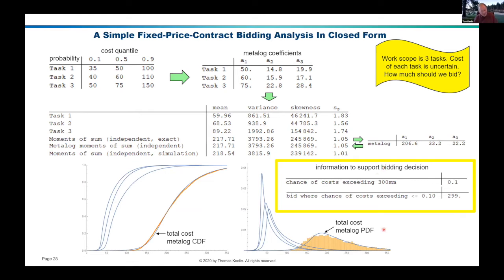Once you have this metalog over total cost, it allows you to provide some information relevant to your original decision: how much should we bid for this fixed price contract? For example, what is the chance of costs exceeding 300 million for the sum of these costs? 300 million is about here — that's about 10% with these assessments. But you might also ask the other way around: what bid would you make if you wanted the chance of costs exceeding that bid to be less than 10%? In other words, a less than 10% chance of failing to make a profit. The answer for this particular set of parameters is 299 million.